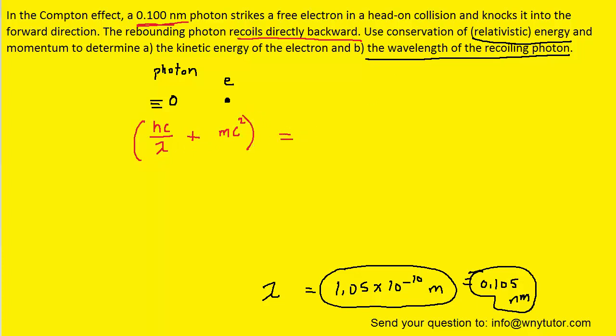And then we move over to the final scenario. There's a collision, and the electron is sent moving off in the rightward direction. The photon rebounds in the leftward direction. And at this point, the photon has a new energy that we can call hc over lambda prime. This lambda prime will be the wavelength of the recoiled photon.